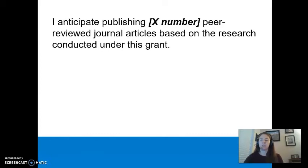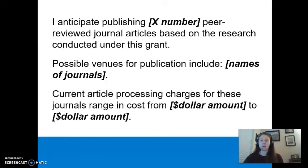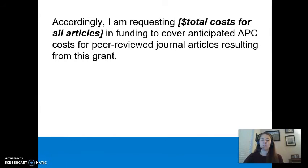I anticipate publishing X number of peer-reviewed journal articles based on the research conducted under this grant. Possible venues for publication include: list the possible journals here. Current article processing charges for these journals range in costs from lowest dollar amount to highest dollar amount. Accordingly, I am requesting total costs for all articles in funding to cover anticipated APC costs for peer-reviewed journal articles resulting from this grant.